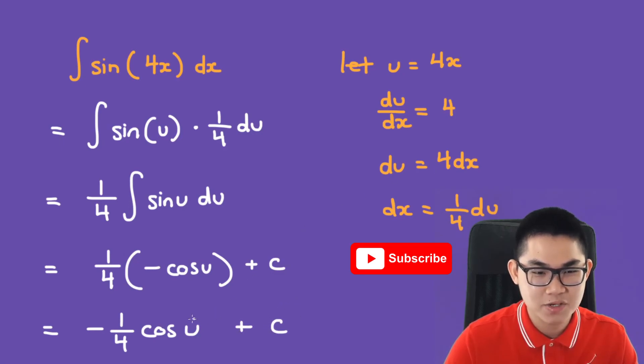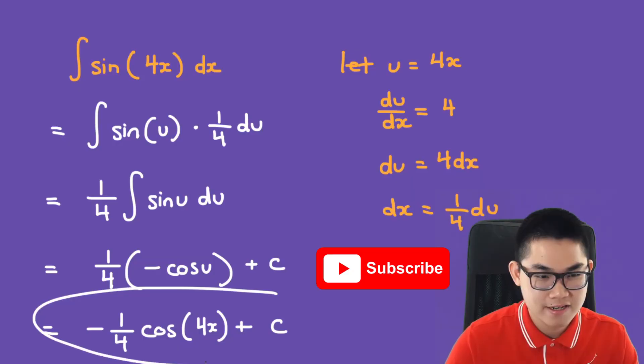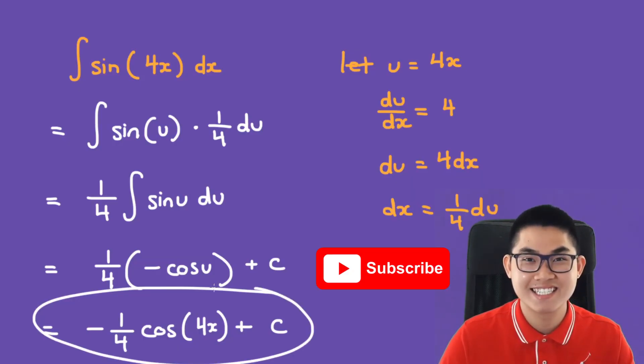And the very last step is to convert the u back into 4x. Because that's what we began with originally. So we have 4x. And this right here is the answer.